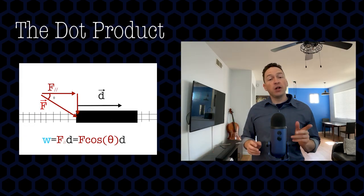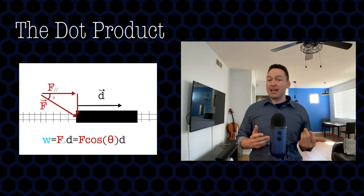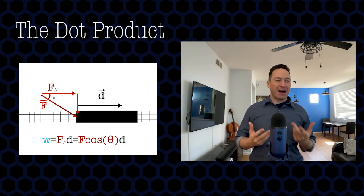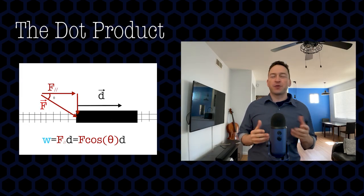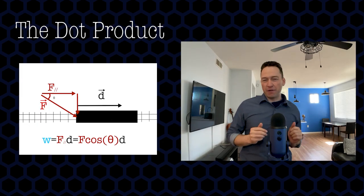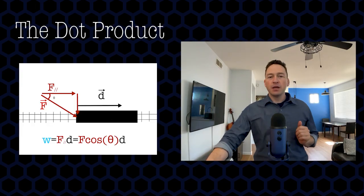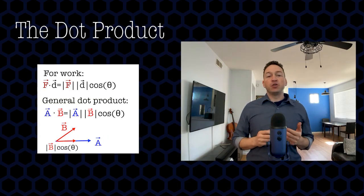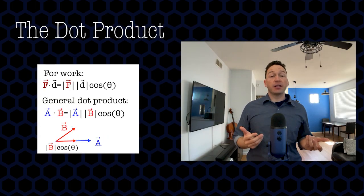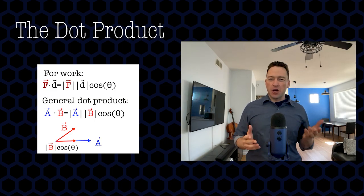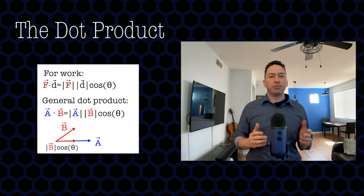The result is a scalar, not a vector, because work refers to the amount of motion that a force causes without thinking about the direction of that motion. This equation is one way to calculate the dot product, and it works when you actually know the angle between the two vectors.